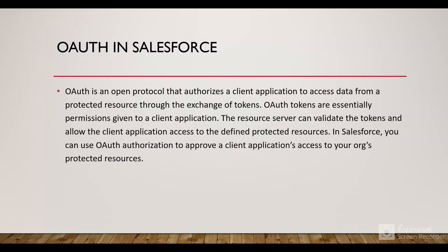OAuth is an open protocol that authorizes a client application to access data from a protected resource through the exchange of tokens. OAuth tokens are essentially permissions given to the client application. The resource server can validate the tokens and allow the client application access to the defined protected resource.